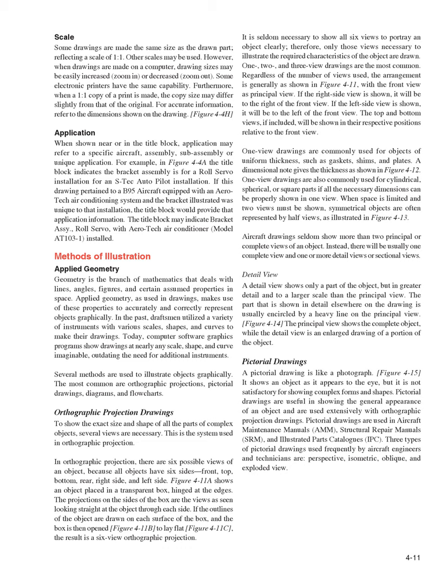Application: When shown near or in the title block, the application may refer to a specific aircraft, assembly, sub-assembly, or unique application. For example, a title block may indicate a bracket assembly for a roll servo installation for an STEC autopilot. If the drawing pertained to a B-95 aircraft equipped with an Aerotech air conditioning system where the bracket was unique to that installation, the title block would provide that application information — such as 'Bracket ASI, roll servo, with Aerotech air conditioner Model AT-1031 installed.'